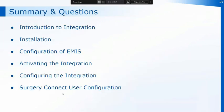During this session we've had a look at the introduction to integration, we've looked at the installation and then the specific configuration of EMIS, and then activating the integration in both EMIS and System 1. We've also looked at the user configuration, which can either be done through the configuration console or individually by users on their own PCs.